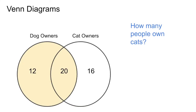You'll seldom see Venn diagrams used in industry. More common in industrial uses are bar charts, line graphs, and maybe pie charts, but certainly not Venn diagrams — I almost never see those used in industry. But for some reason they're very popular on the ACT and SAT, these standardized tests. So it's important as a student to understand Venn diagrams and how to interpret them.